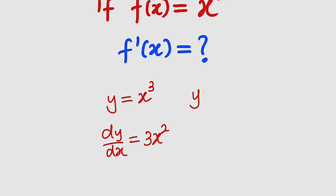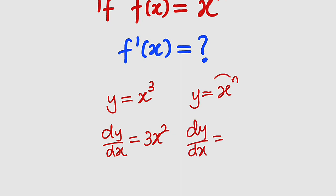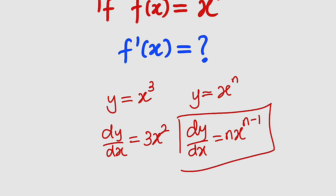Similarly, if you have y equal to x to the power of n, dy over dx will be equal to nx to the power of n minus 1. And this is nothing but the derivative of x to the power of n. So we want to prove that the derivative of x to the power of n is equal to nx to the power of n minus 1, but from the first principle. Let's get started.